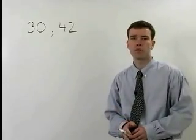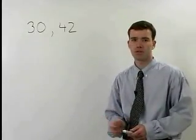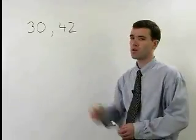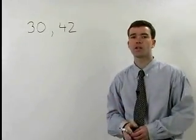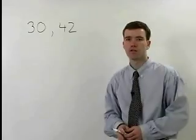To find the greatest common factor between two monomials that are just numbers like 30 and 42, we start by setting up a factor tree for each of those numbers.